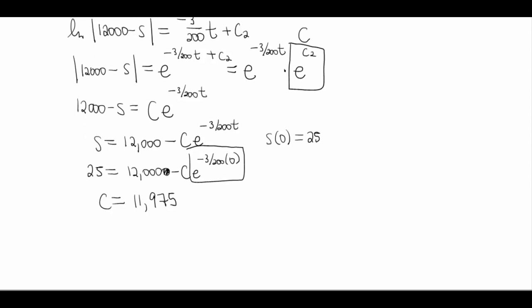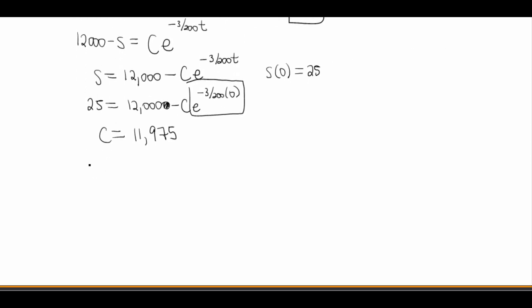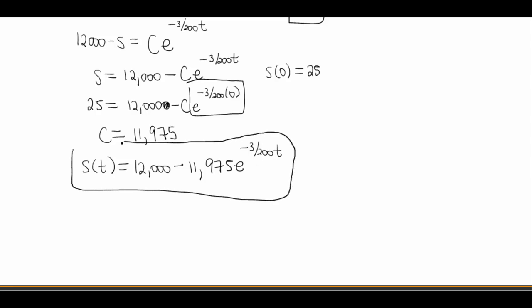So our final function then is going to be S of t is 12,000 minus 11,975 E to the negative 3 over 200t. And if anybody tries to combine these two things together, shame on you. Because remember, we got to follow order of operations, so that means we got to multiply by this E part first. So there's no way to simplify this lovely function here.